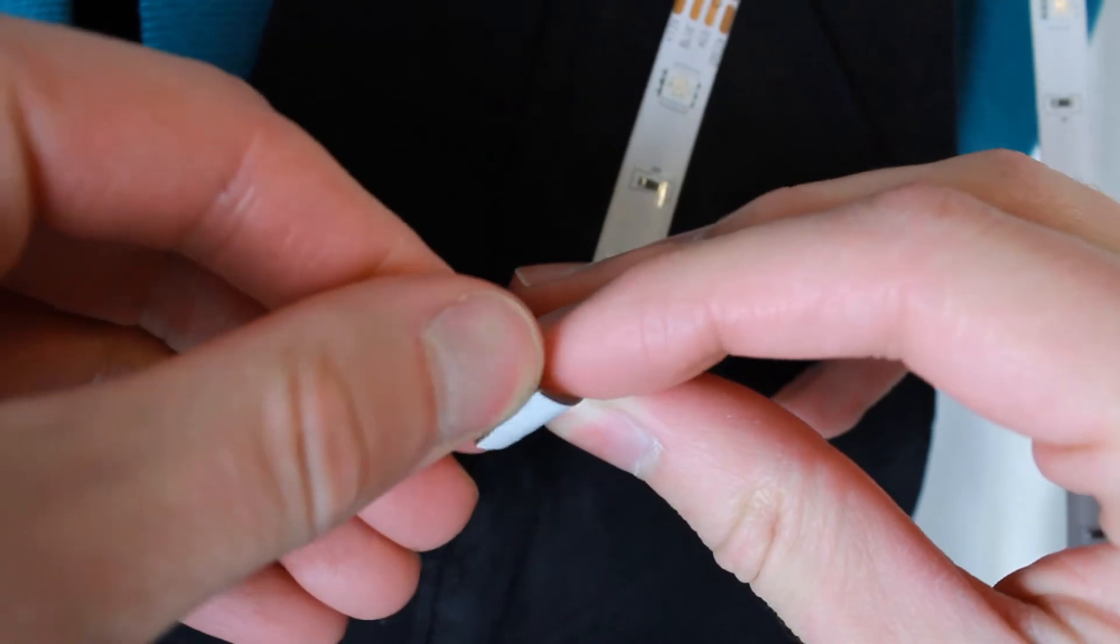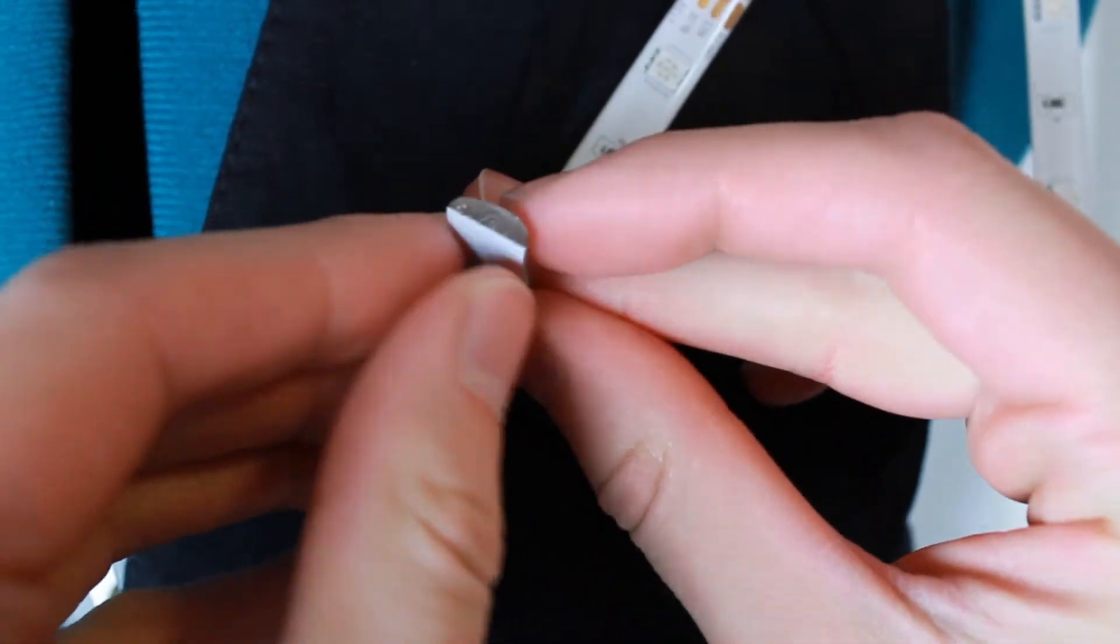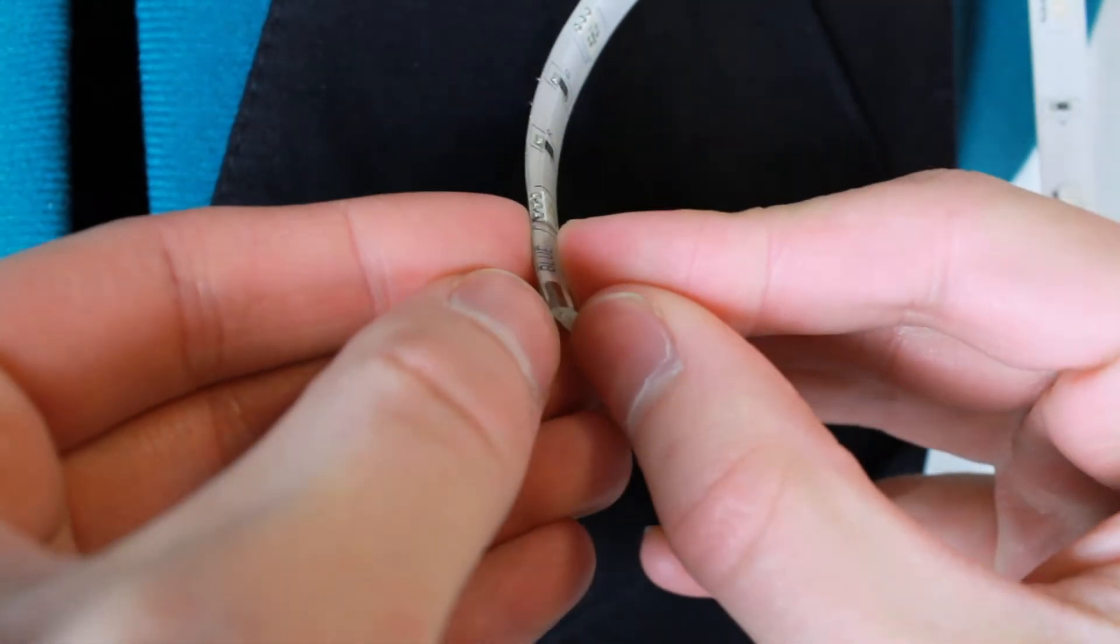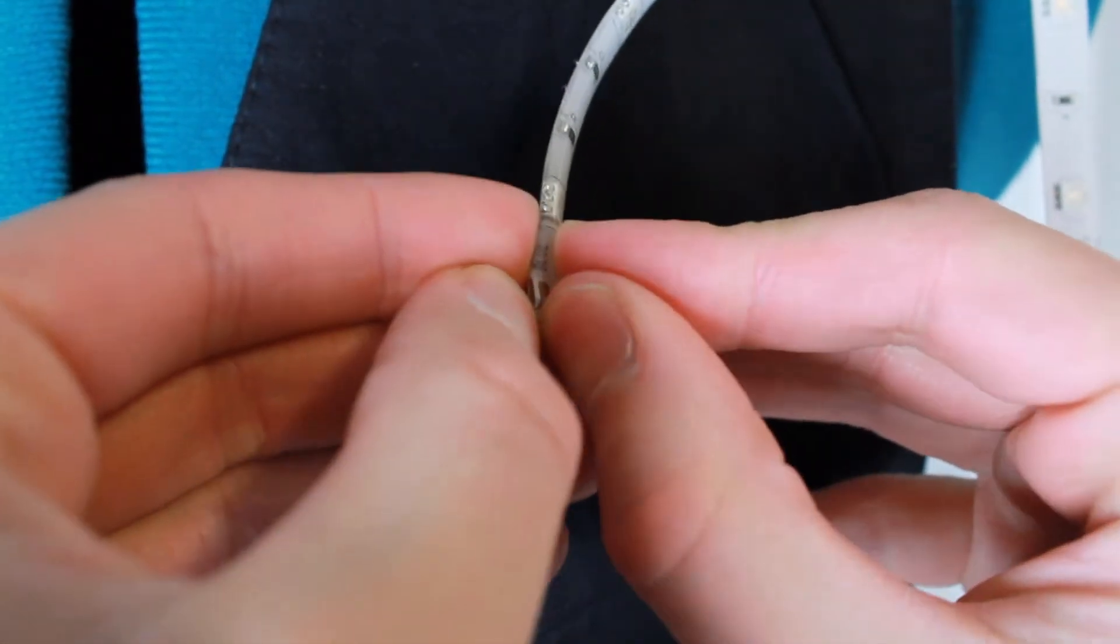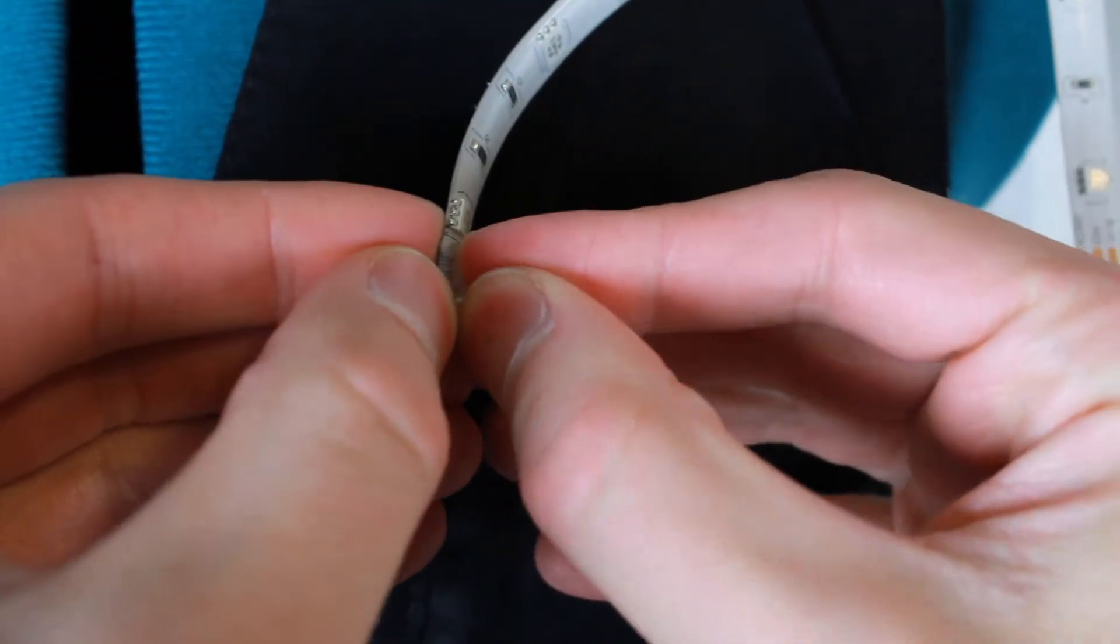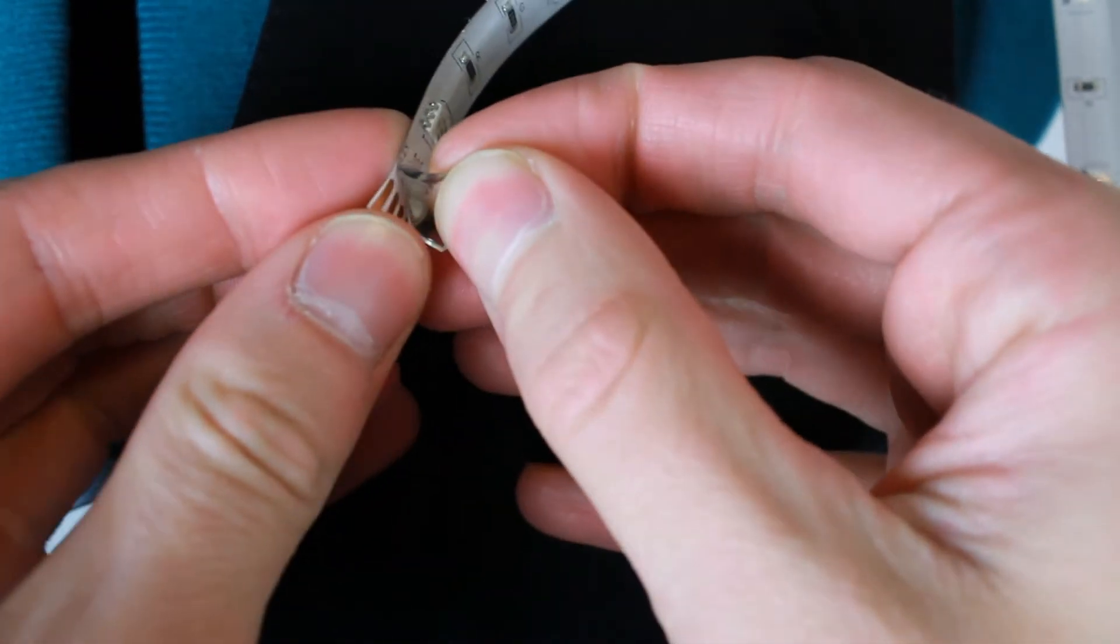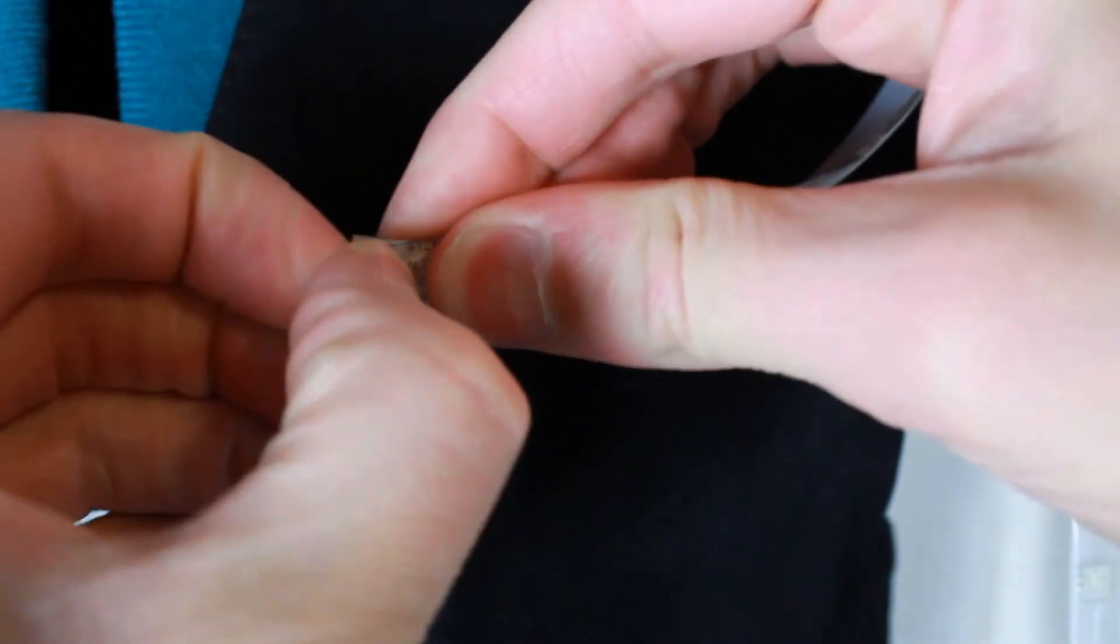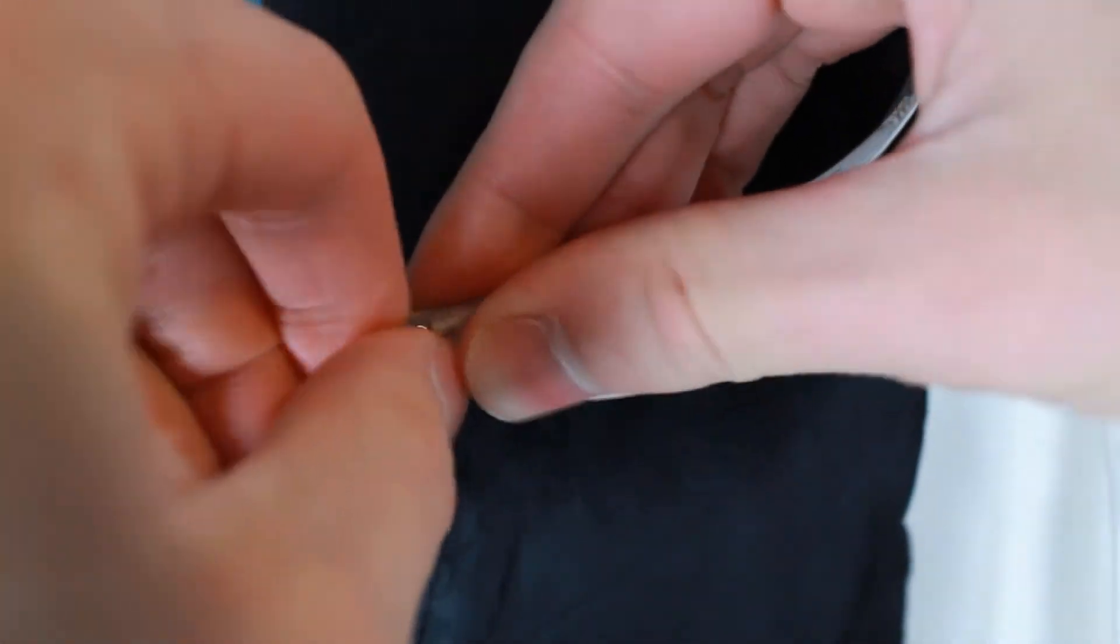Remember when I said I found an easier way for removing the rubber coating? Well it turns out that you can actually peel the rubber off the strip itself if you can get your nail between the strip and the rubber. Then you just pull hard to snap off the peeled section.